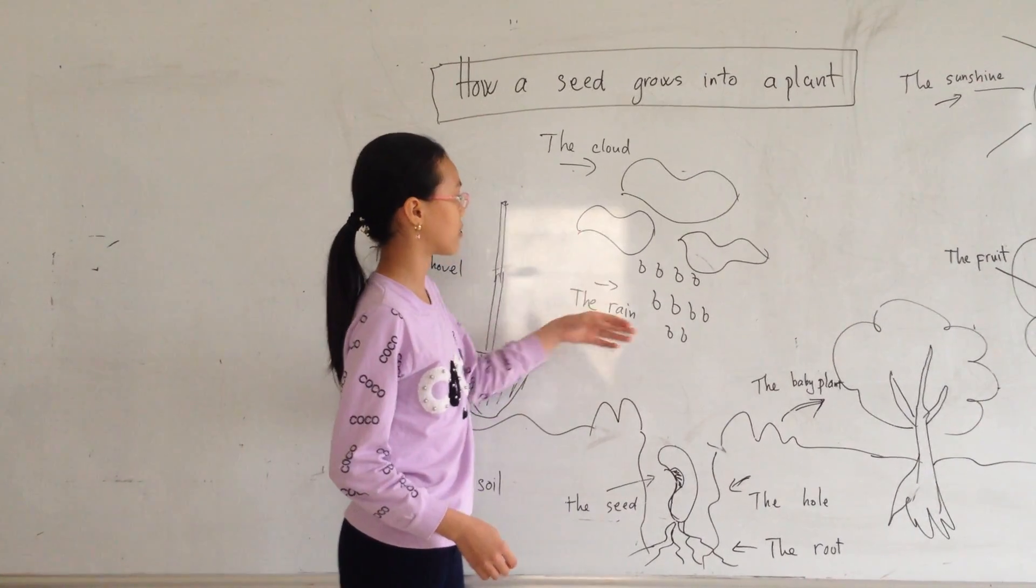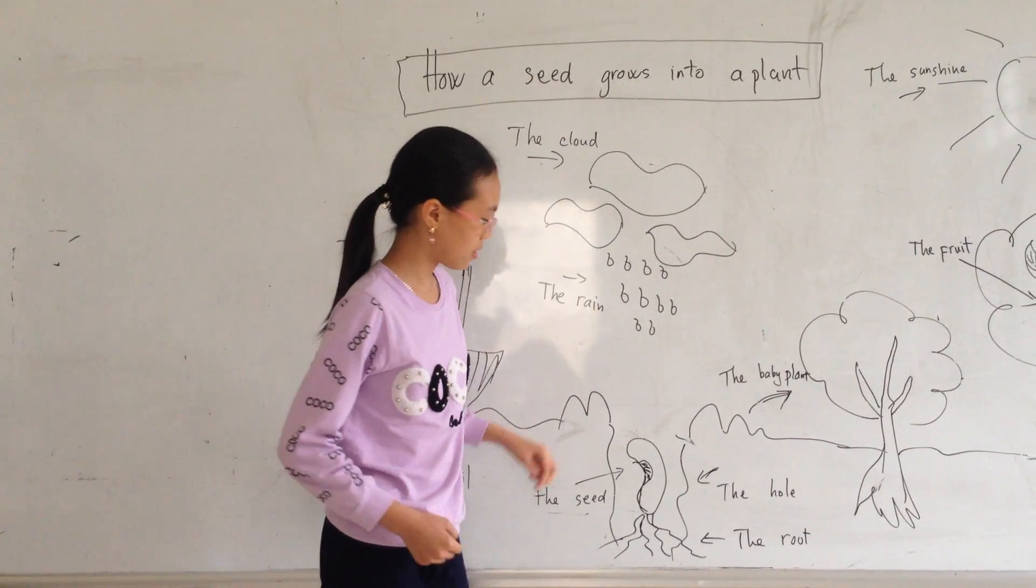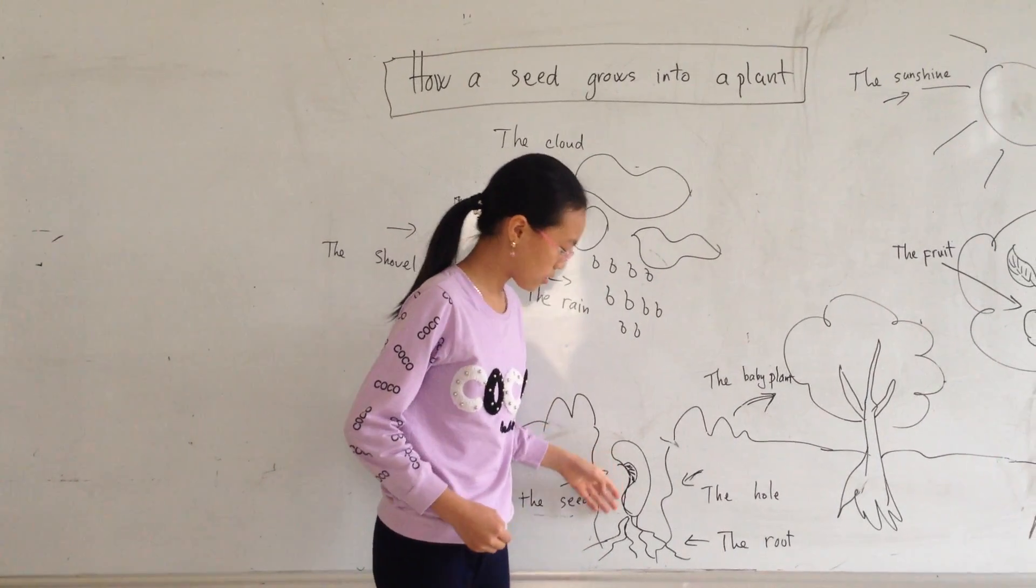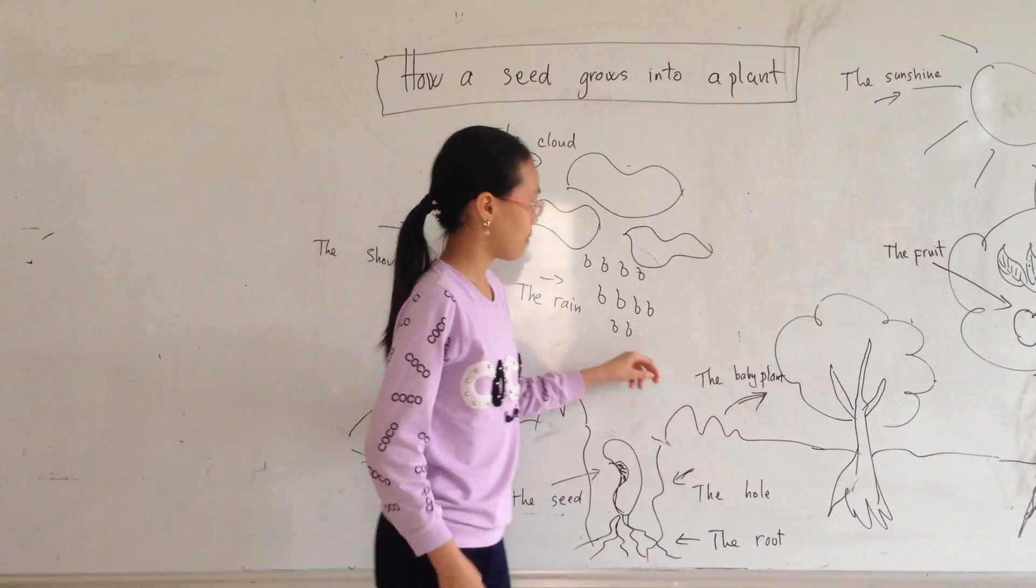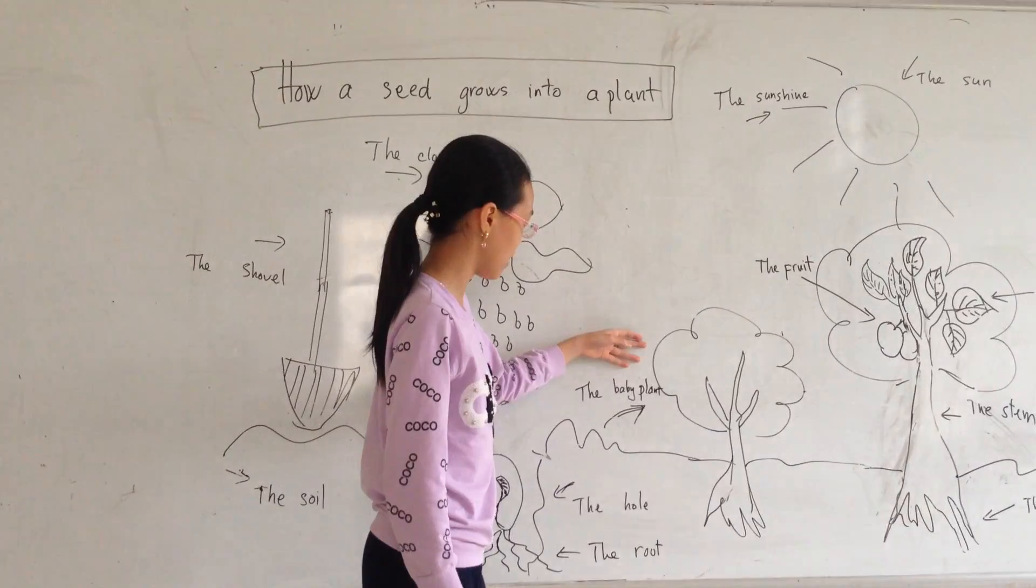The seed receives water from the clouds and nutrients from the soil. The seed begins to sprout. Then, the seed grows into a plant, a baby plant.